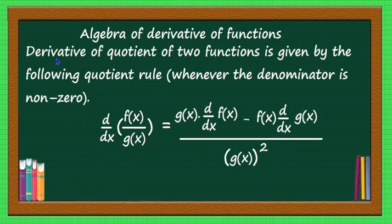The fourth rule is the quotient rule. The derivative of the quotient of two functions, when the denominator is non-zero, is: d by dx of f of x divided by g of x equals g of x into d by dx of f of x, minus f of x into d by dx of g of x, whole divided by g of x whole square. When a quotient of two functions is given, apply this formula.